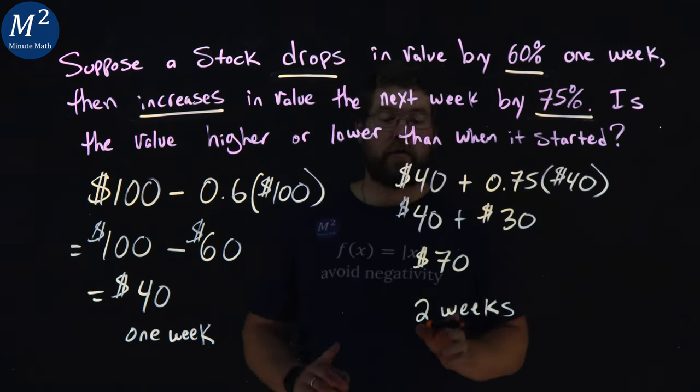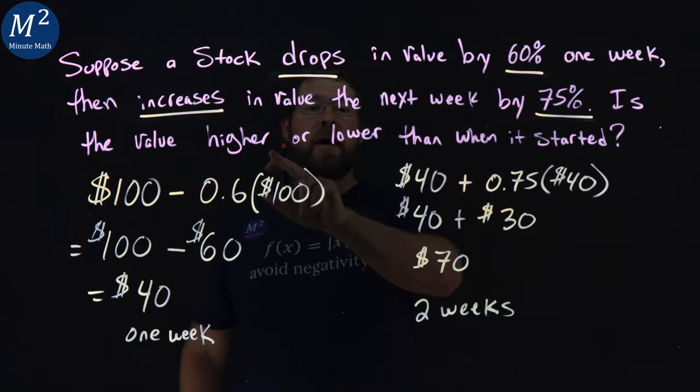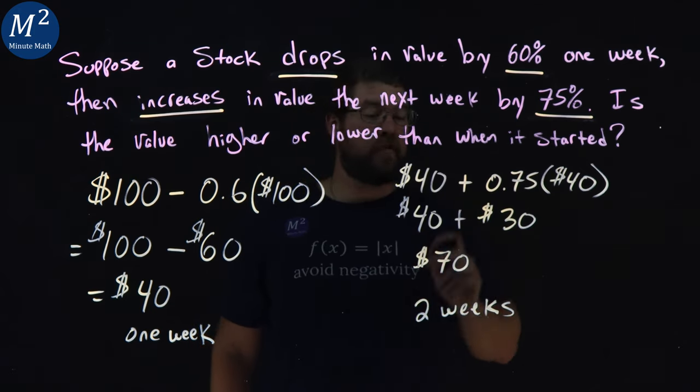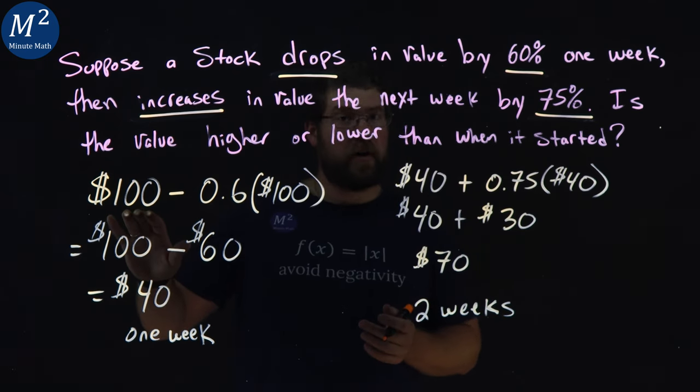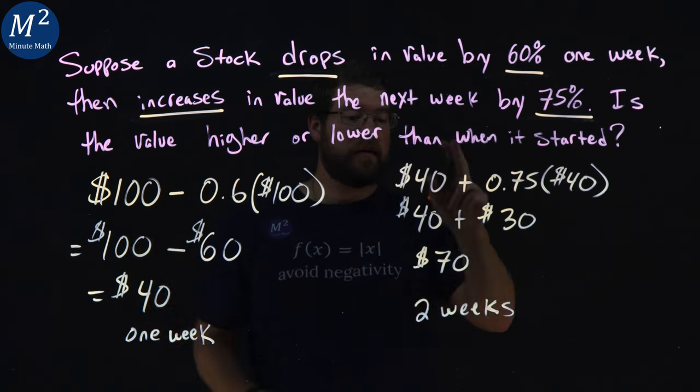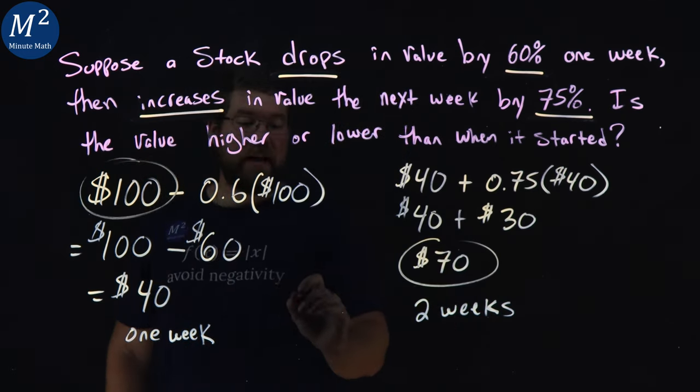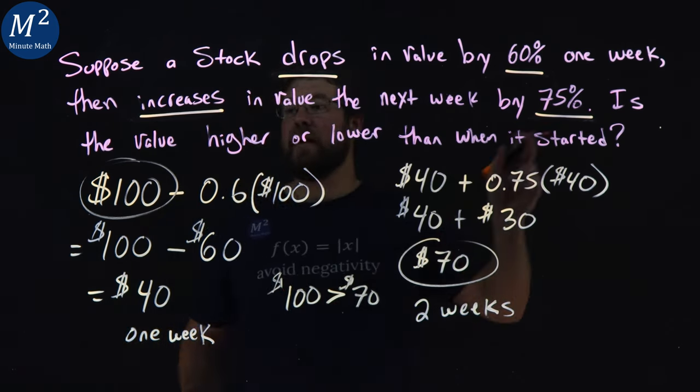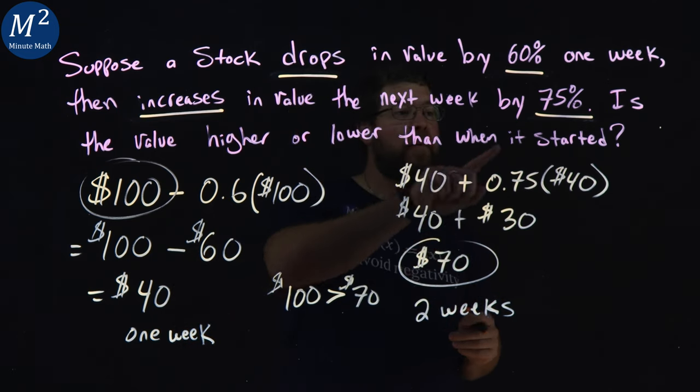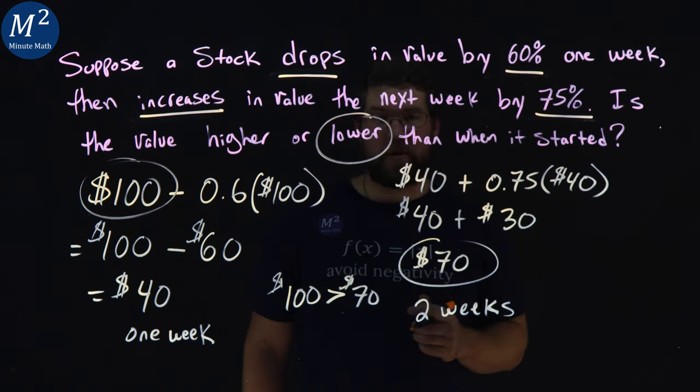So the question they ask us here, is the value higher or lower than when it started? Well, we started with a hypothetical value of $100. And by doing our calculations, it ended up being only $70. And we can say that 100 is clearly greater than 70. So is the value higher or lower than when we started? The answer is the value is lower than when it started.